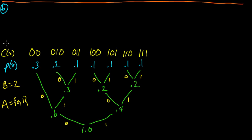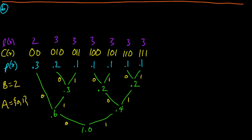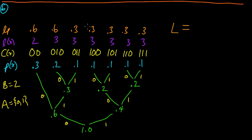Let's compute the lengths and expected length. The lengths are: 2, 3, 3, 3, 3, 3, 3 — lots of threes. Taking the product of lengths times probabilities we get: 0.6, 0.6, 0.3, 0.3, 0.3, 0.3, 0.3. Summing those up: 0.3 times 5 is 1.5, plus 1.2, which gives an expected length of 2.7 bits, since b=2.